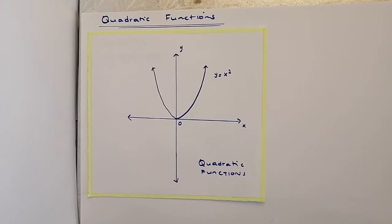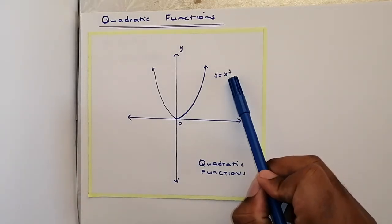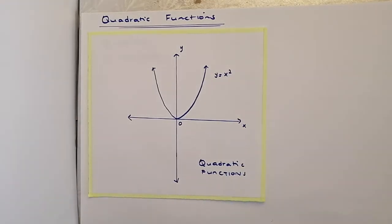Today we're looking at quadratic functions, also called parabolic functions, or simply parabolas. The reason they are called quadratic functions is because the highest power of x equals 2. If you see y equals x cubed, or y to the fourth power, that is not a parabola.